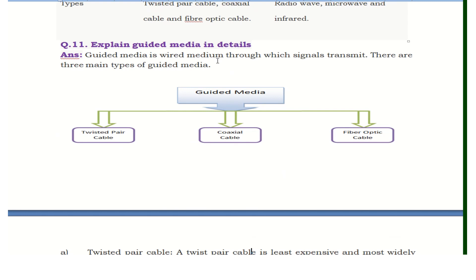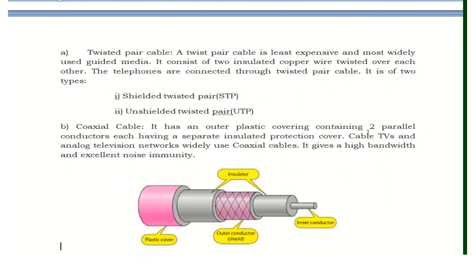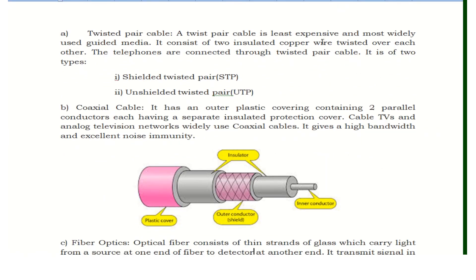The next question is: explain guided media in detail. There are three main categories of guided media: twisted pair cable, coaxial cable, and fiber optic cable. First is twisted pair cable, which is the least expensive and most widely used in guided media. There are two insulated copper wires twisted over each other. The telephones and landlines in your house are connected using twisted pair cables. There are two types: shielded twisted pair and unshielded twisted pair.